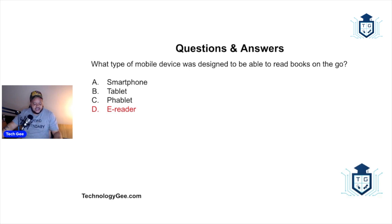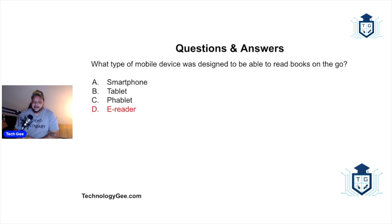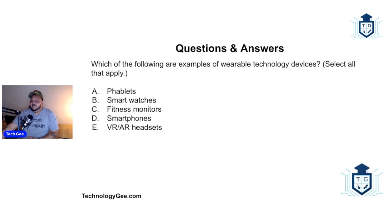Technically all four devices can read books — your iPhone has a book app, a tablet or phablet can do the same. A phablet is a combination phone/tablet; the latest big iPhones are technically phablets. But this question is about a dedicated device, and that's the e-reader. A smartphone may have a book reader app, but it's not a dedicated e-reader.